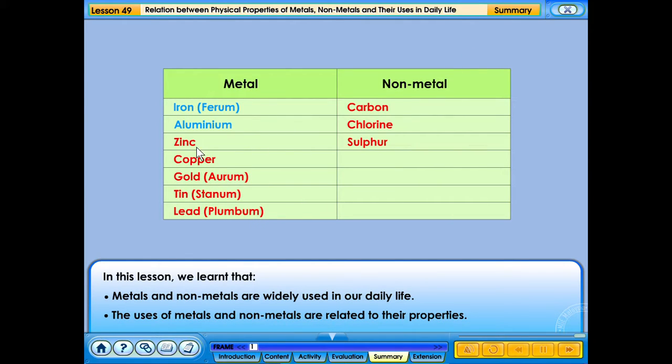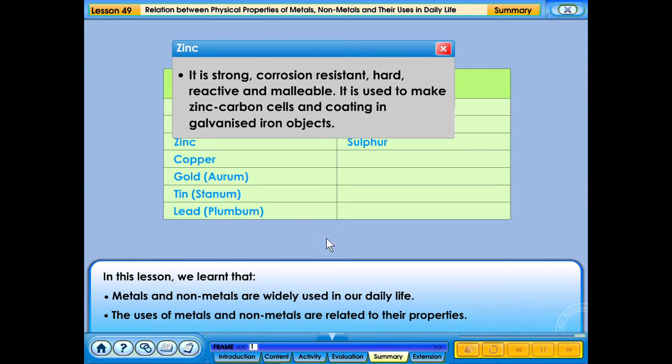It is strong, corrosion resistant, hard, reactive and malleable. It is used to make zinc carbon cells and coating in galvanized iron objects.